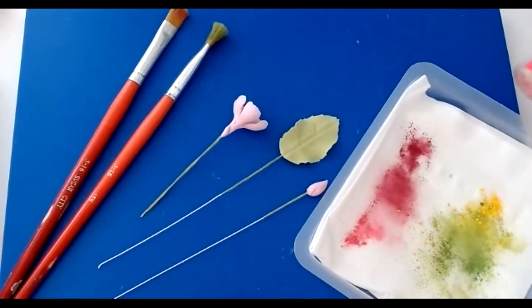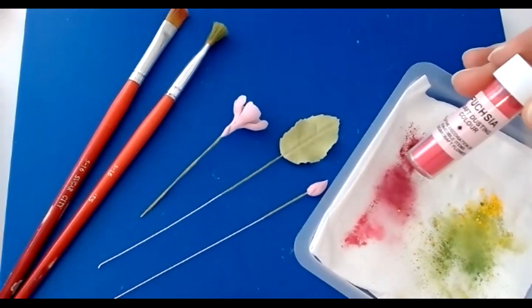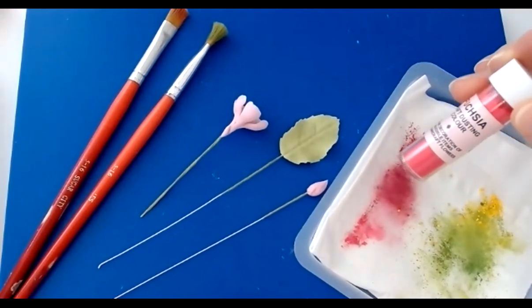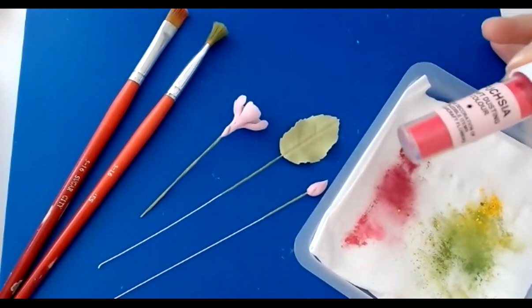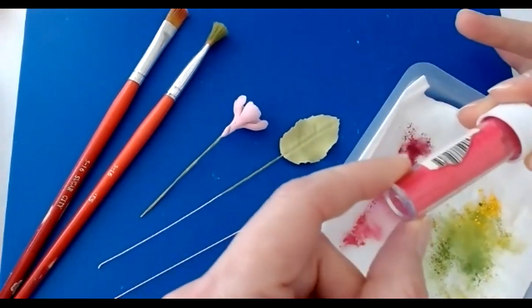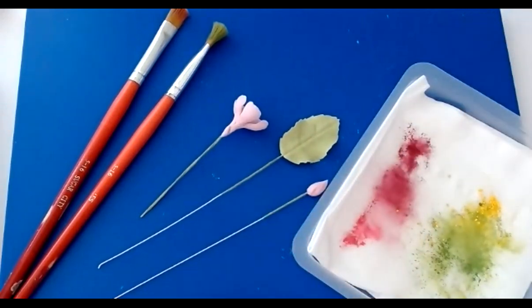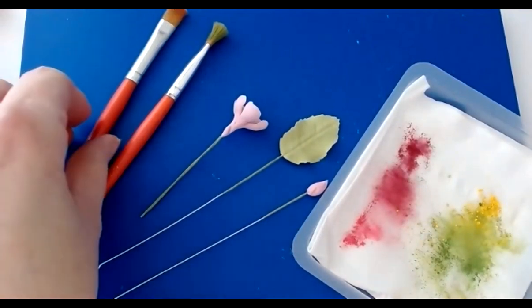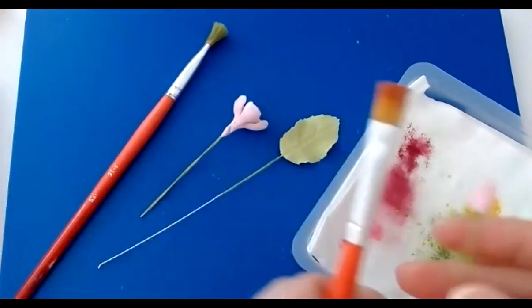To color I've used blossom tints or petal dust and they're the dry powders that are found usually in a screw pot like this or a flat one. I've used four colors for this particular flower. I've got fuchsia pink, plum, moss green and lemon yellow.